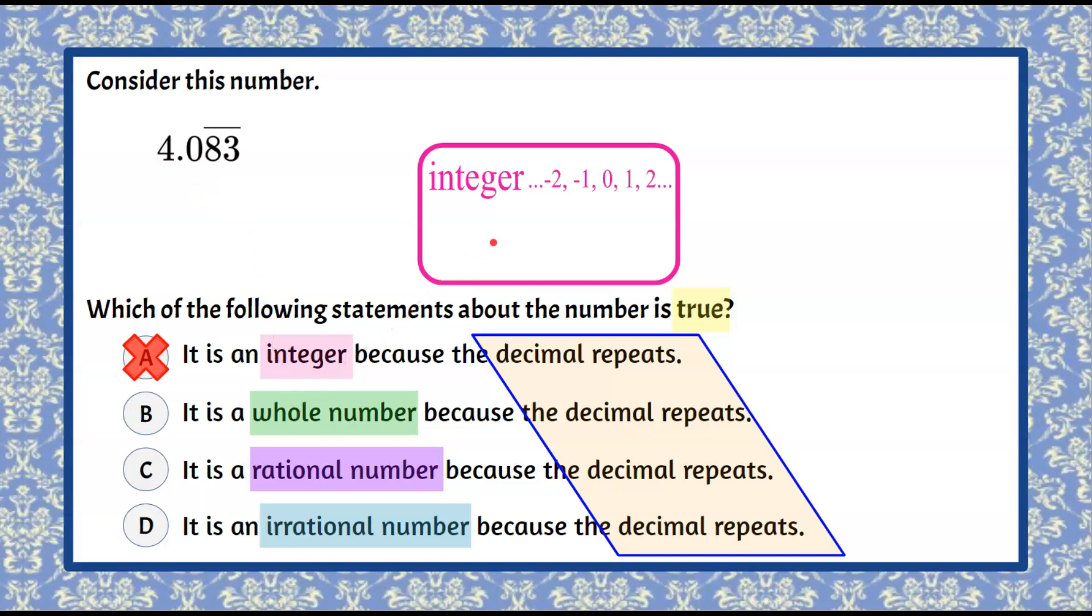Now when we talk about our whole numbers, our whole numbers are part of the integer family. It is our 0 and our positive counting numbers, 0, 1, 2, 3, extending infinitely only to the right. So all of these whole numbers are also integers, but a whole number cannot be a decimal. So we know that we can rule out answer choice B as well.